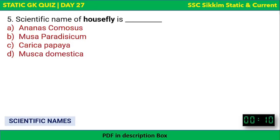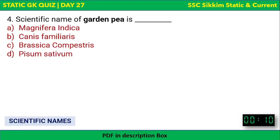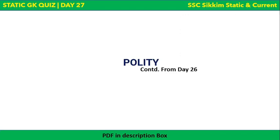Next: What is the scientific name of housefly? Options are Ananas comosus, Musa paradisiacum, Carica papaya, or Musca domestica. The correct answer is Musca domestica — that is the scientific name of housefly. The other options we have already discussed: Carica papaya is papaya, Musa paradisiacum is banana, and Ananas comosus is pineapple. This completes the scientific names section.